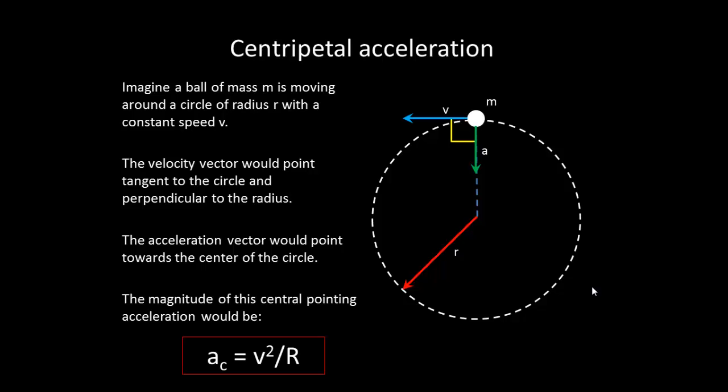This is why we refer to it as a centripetal acceleration, because it is center seeking. The magnitude of this central pointing acceleration would be equal to v squared over r. This is a note card equation.